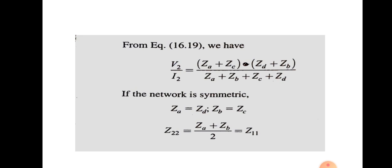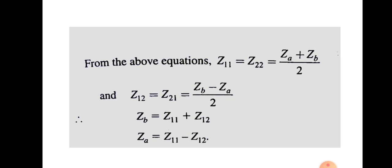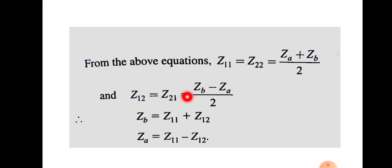For a symmetric lattice network with ZA = ZD and ZB = ZC, the results are Z11 = Z22 = (ZA + ZB) / 2, and Z12 = Z21 = (ZB − ZA) / 2. Since Z11 = Z22, the network is symmetric, and since Z12 = Z21, the network is also reciprocal — making it a symmetric reciprocal network. By rearranging these equations, we can also express ZB and ZA in terms of the Z-parameters. This concludes the analysis of lattice networks. Thank you.